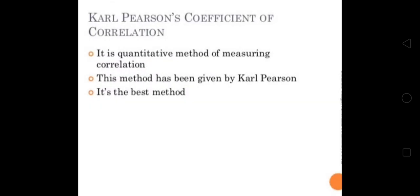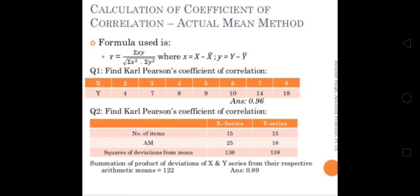Karl Pearson coefficient is the second one. It is the quantitative method of measuring correlation given by Professor Karl Pearson. It is the best method. This is the formula: r = Σxy / √(Σx² × Σy²).